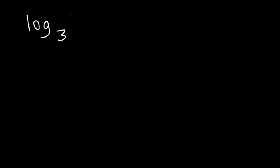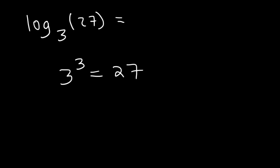What is log base 3 of 27? How many 3's do you need to multiply to get to 27? You need to multiply 3, three times to get to 27. 3 times 3 times 3 is 27. So log base 3 of 27 is 3.